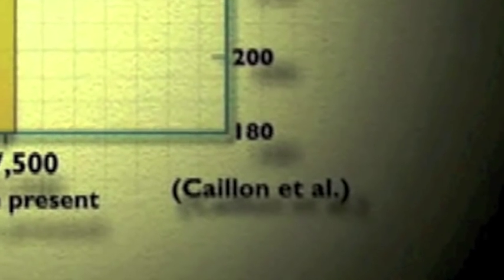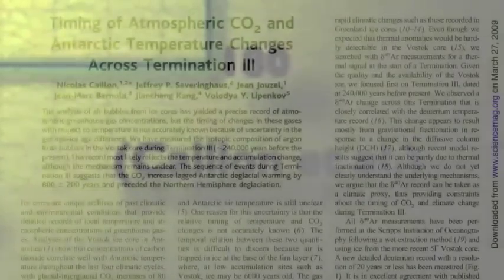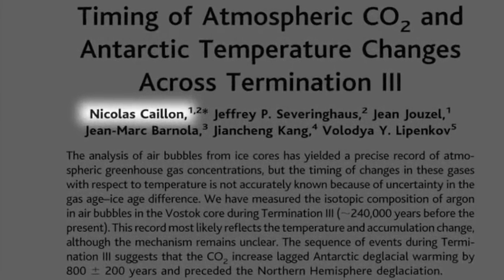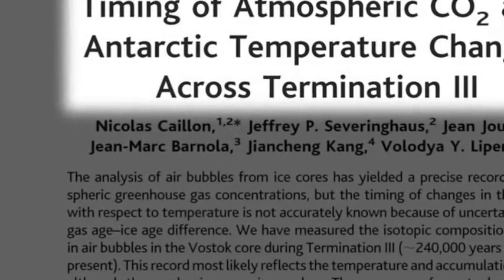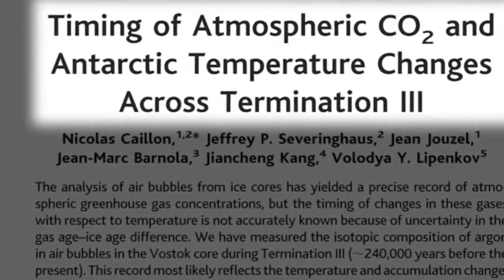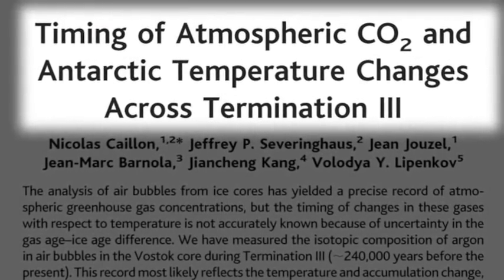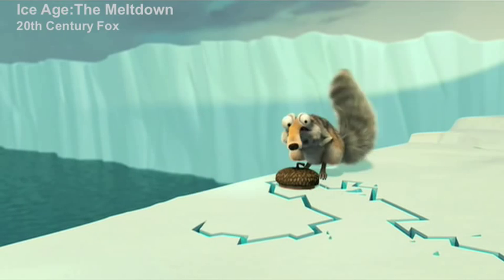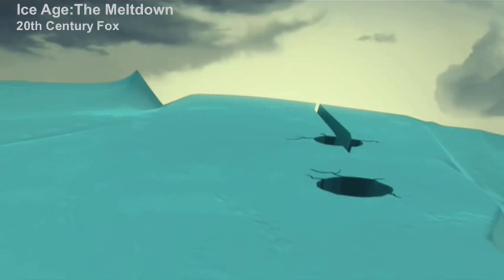Those who have watched this series for a while know that I always like to go to the source of any claim that climate deniers make. In this case, a study by Nicholas Caillon, published in Science in March of 2003, which of course, we'll actually read. It's titled, Timing of Atmospheric CO2 and Antarctic Temperature Changes Across Termination 3. Termination 3 refers to the warming that brought the planet out of a previous glacial period 240,000 years ago.